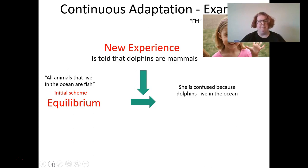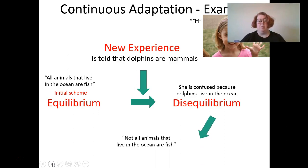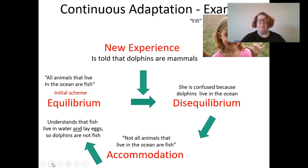So now Fifi says not all animals that live in the ocean are fish. Is that accommodation or assimilation? It's accommodation, because she changed her schema about the world. She now understands that fish live in water and lay eggs, so dolphins are not fish. She had a modified schema.